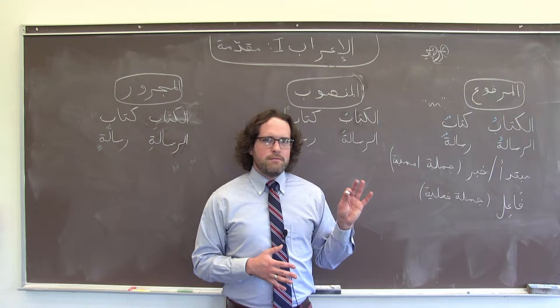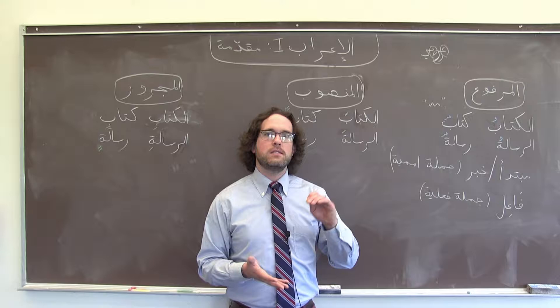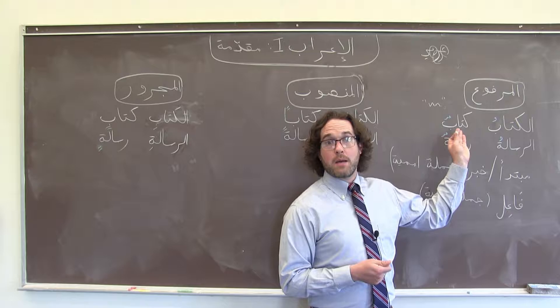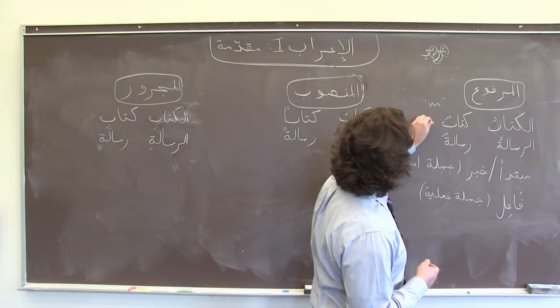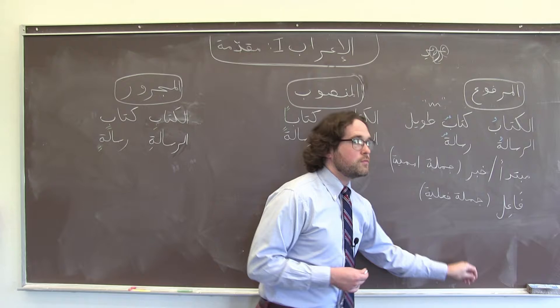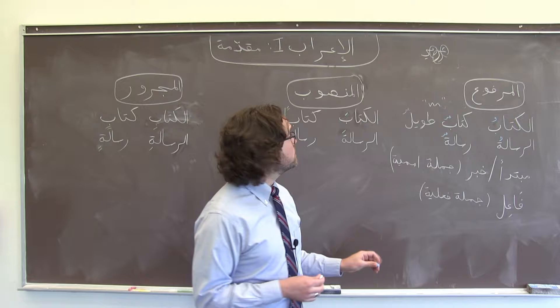Remember that adjectives always agree with their nouns in terms of definiteness, number, and case. So if we're talking about a كتاب, for example, and we wanted to say 'a long book,' and it were fully vocalized, we would say كتابٌ طويلٌ. Adjectives obey the same rules.